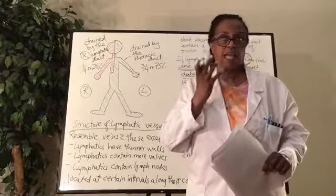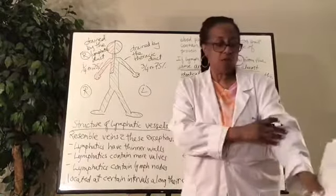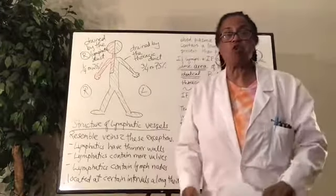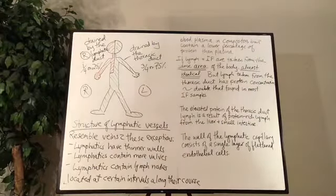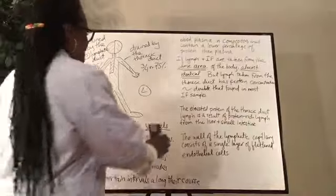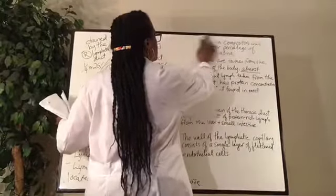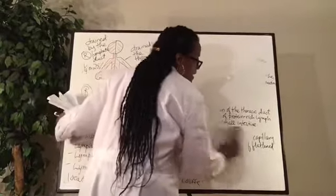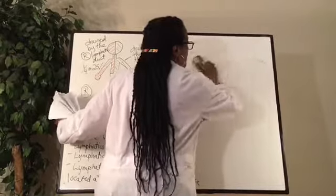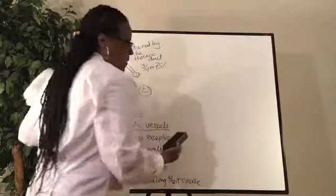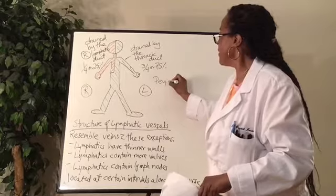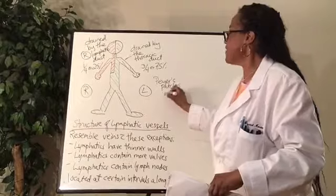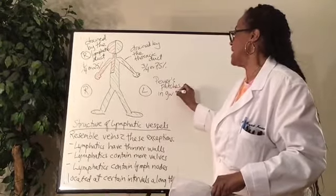The nodes are usually in areas where you have bending — like in the neck, the elbows, the creases of the knee, or the groin area. Where we usually have bending is where you'll see a congregation of nodes. Interestingly, there are some nodes in the gut, known as Peyer's patches. Make sure you are familiar with Peyer's patches — a lymphatic system structure located in the gut.